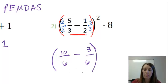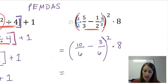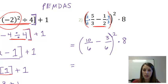So now inside my parentheses, I have a common denominator. But don't forget to copy everything from step to step so you don't lose anything along the way. So working inside my parentheses, I can subtract these fractions. 10 minus 3 gives me 7, over my LCD of 6. That is squared times 8.